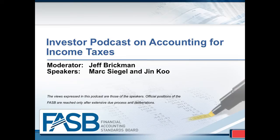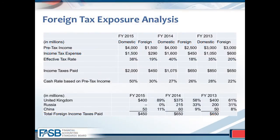What does this mean for investors? Investors would have additional information to potentially help them assess foreign tax exposure. For example, the company in this example discloses GAAP pre-tax income and income tax expense for fiscal years 2013 to 2015 broken down between domestic and foreign. From this information an investor could calculate the effective tax rate by dividing income tax expense by pre-tax income. Further, as part of the new disclosure, the company would be required to disclose actual tax payments — cash flows out the door — to domestic and foreign jurisdictions.